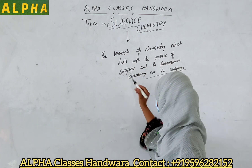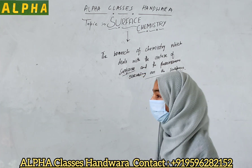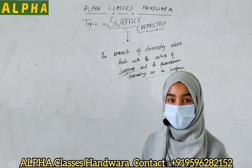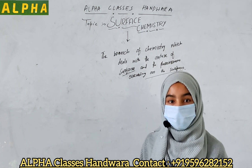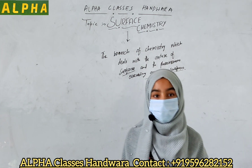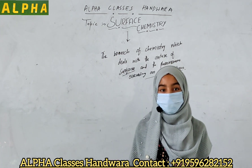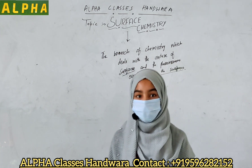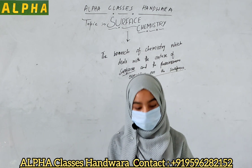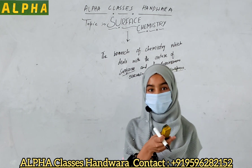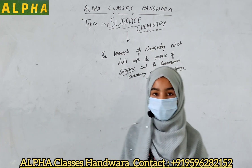Now, what are these surfaces? Surfaces are actually the boundaries which separate two phases. For example, which separates solid from gas, or liquid from liquid. Sometimes we call them interfaces. For example, this is the solid phase and above it is air; this layer which separates the solid phase from the gaseous phase is known as a surface or interface.